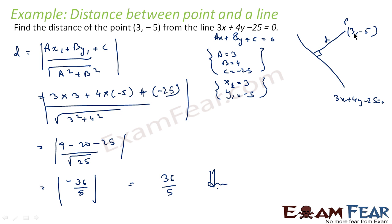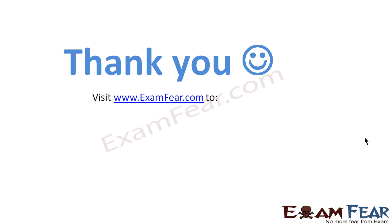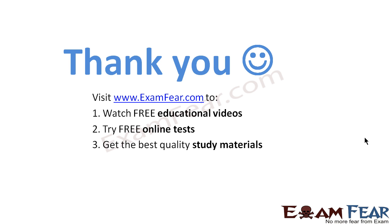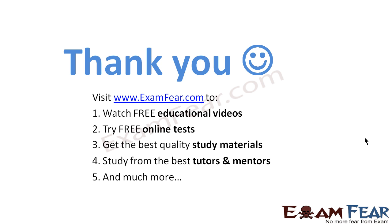So from the point (3, minus 5), the distance to the line 3x plus 4y minus 25 equals 0 is 36 by 5. It's very simple — we just find the values of a, b, c, x1, y1 and substitute into the formula mod of (ax1 plus by1 plus c) over root of (a squared plus b squared). Thank you. Visit examfear.com to watch free educational videos, try free online tests, get the best quality study materials, and study from the best tutors.